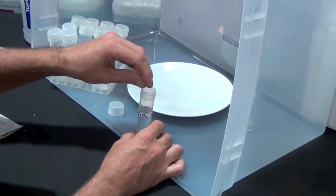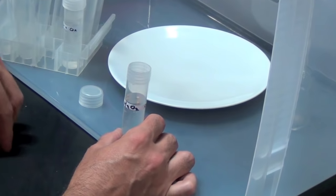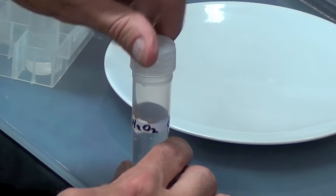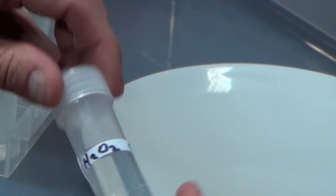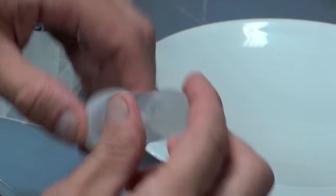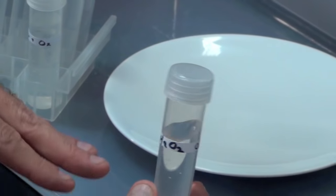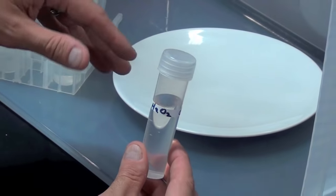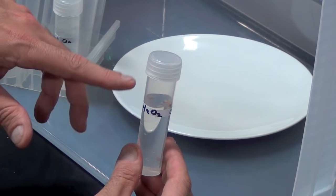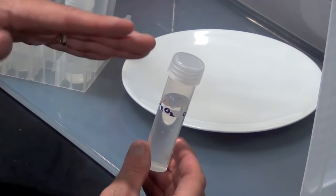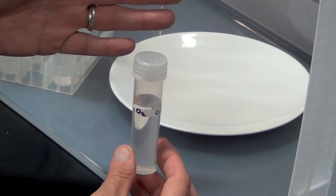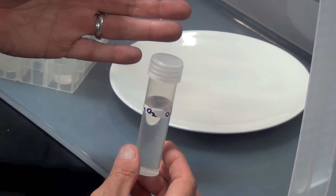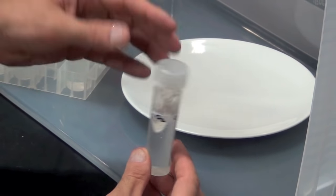We're just going to throw in a couple of seeds, close that up, and swirl the vessel back and forth. We'll leave this in a warm and not brightly lit location until the surface of the seeds is clean - usually anywhere from 15 minutes to an hour, depending on whether you have a smooth or rough surface seed.